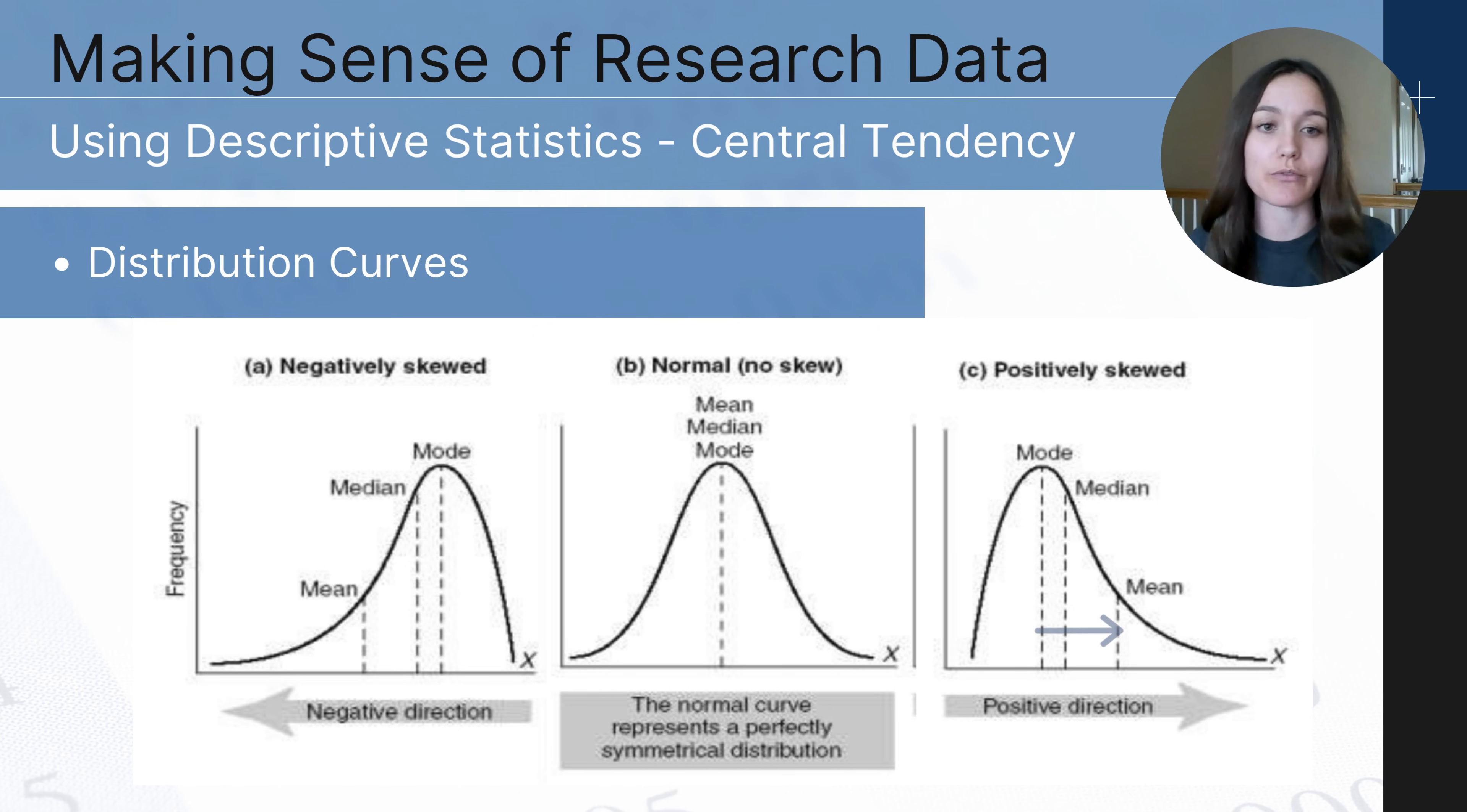Where you have a couple of outliers scoring much higher and it's pointing to the right and on the number line the right is positive. And so that helps you think of a positive skew where you have a couple of outliers who have scored higher than the average or higher than the majority pulling the mean up.